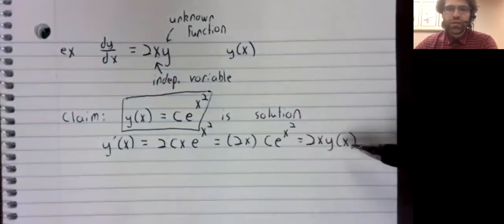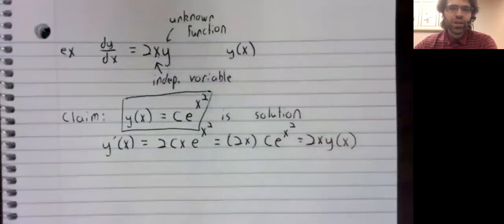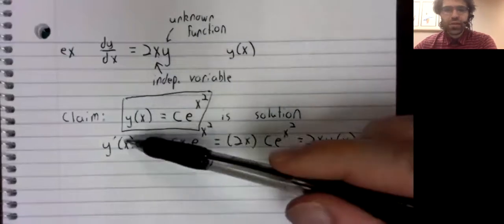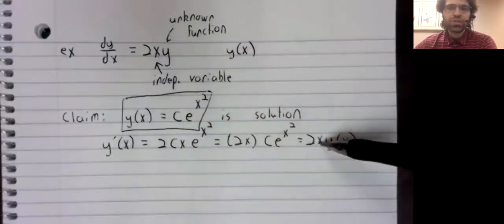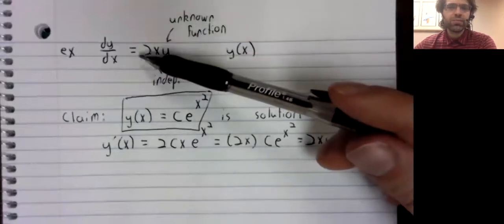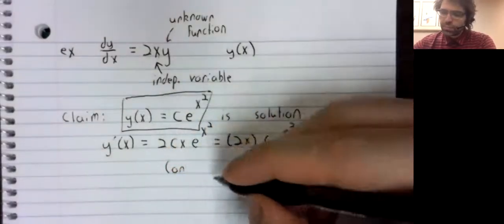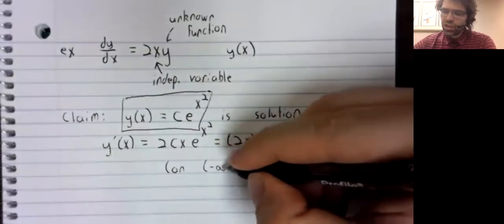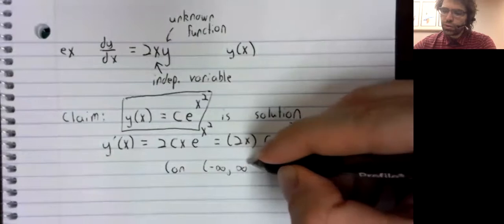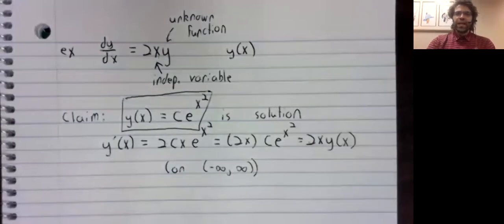So we have exactly what we wanted. Here we're using function notation. Here we're not. But in both cases, the derivative of y is 2 times x times y, exactly as we wanted. And this is once again true on an interval, on the entire real number line.